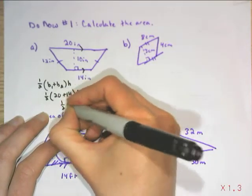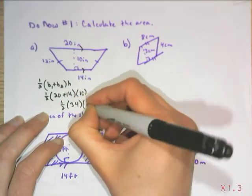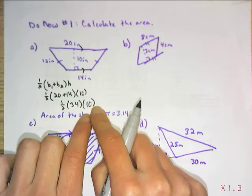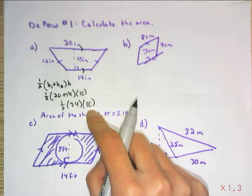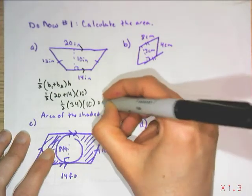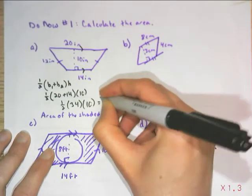So we have half of 34 times 10, and I can half various different ways, but in the end, you should be getting 170. My units are square inches.